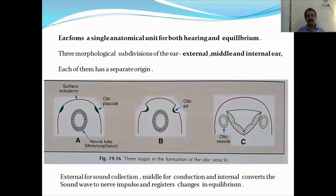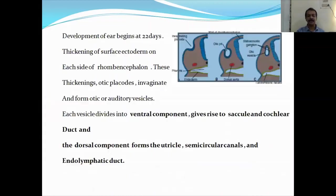All three — the external, middle, and the internal ear — have got a separate origin. The external ear is for sound collection, the middle ear for sound conduction, and the internal ear converts the sound wave to nerve impulses and registers changes in equilibrium.